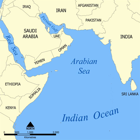=== Southern Ocean === Amundsen Sea, Bass Strait, Bellingshausen Sea, Cooperation Sea, Cosmonauts Sea, Davis Sea, D'Urville Sea, Drake Passage, Great Australian Bight, Gulf St. Vincent, Investigator Strait, King Haakon VII Sea, Lazarev Sea, Mawson Sea, Riiser-Larsen Sea, Ross Sea, Scotia Sea, Somov Sea, Spencer Gulf, Weddell Sea.